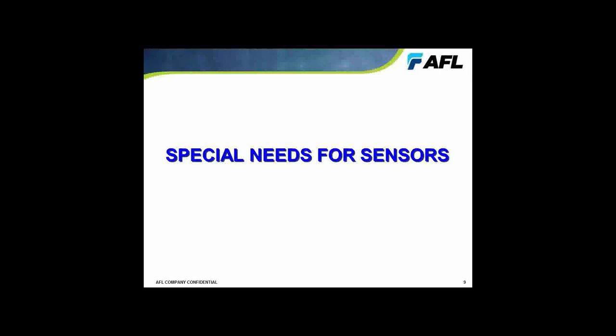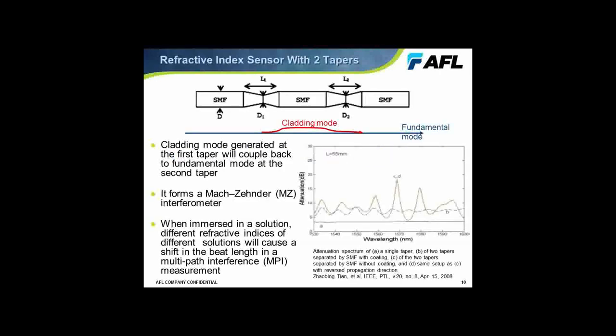Another area that has generated a lot of activity is the need for fiber-based sensors — there are a tremendous number of types. One of the more unusual ones involves forming a Mach-Zender interferometer by generating two tapers in close proximity. The first taper couples some light into a cladding mode, and how much of that light is reabsorbed at the second taper depends on the refractive index of the solution into which this device is immersed, effectively creating a chemical sensor.